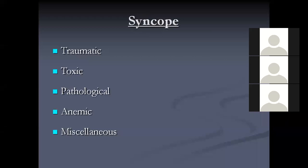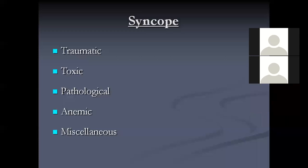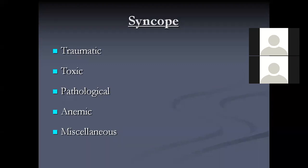Syncope: traumatic causes include injury to the heart, stab wound in the heart, cardiac tamponade. Toxic causes include cardiac toxins such as digitalis, digoxin, and aconite. Pathological causes include pathology of the myocardium, endocardium, pericardium, heart valves, conducting system, anemia, and high output failure. Miscellaneous causes include over-exercise and exhaustion.